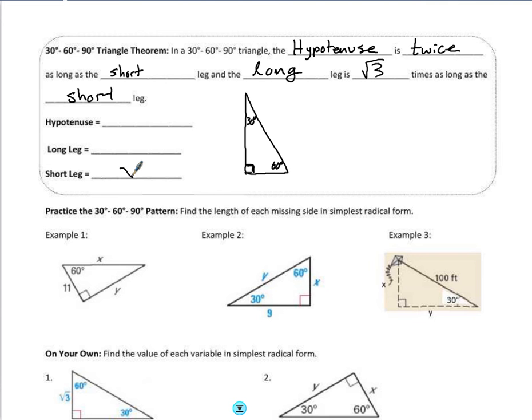So if short leg was x, for example, how do I know which leg is the short leg? Well, the short leg is always going to be opposite of the smallest angle. So when I look at 30 degrees, the side opposite of that would be this side right here, x.